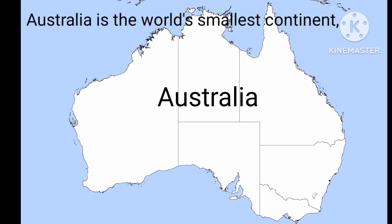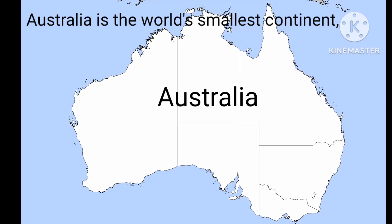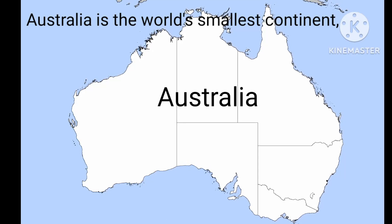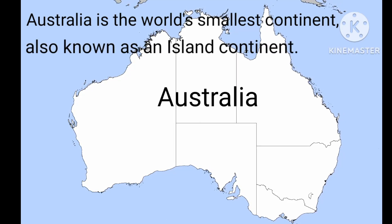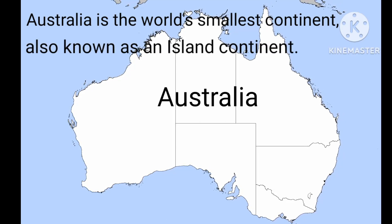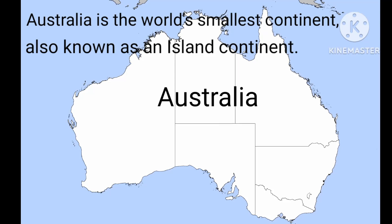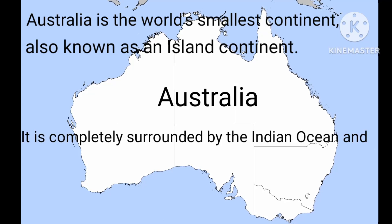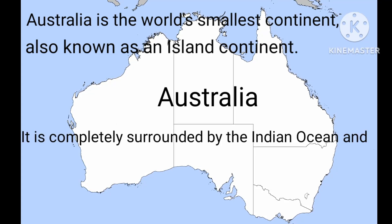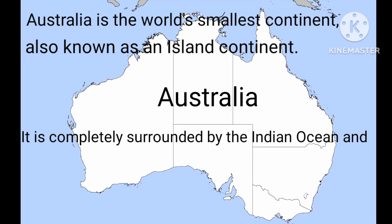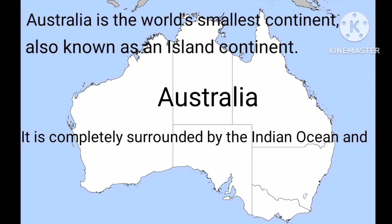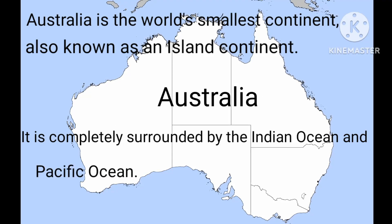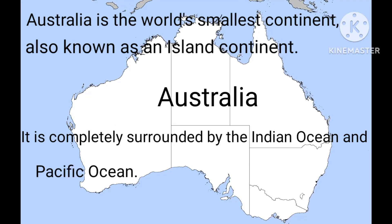Australia is the world's smallest continent, also known as an island continent. It is completely surrounded by the Indian Ocean and Pacific Ocean.